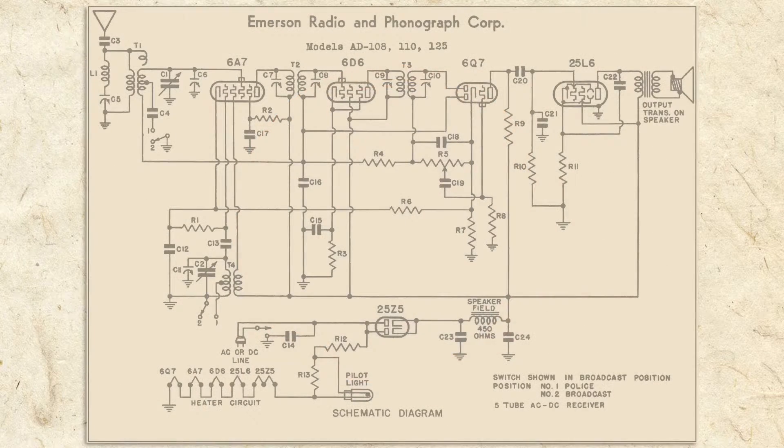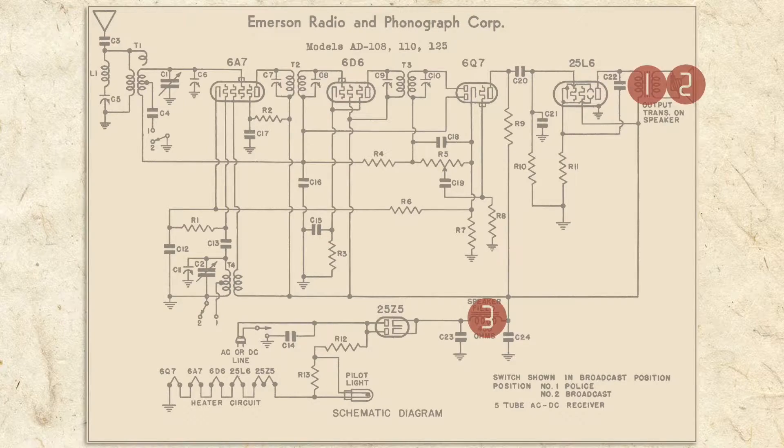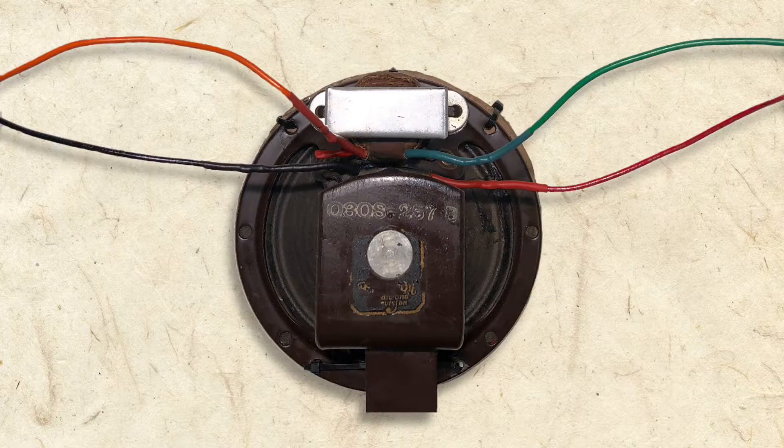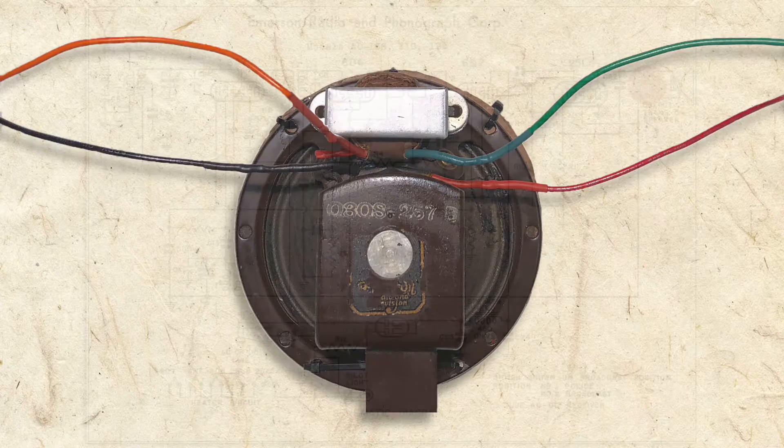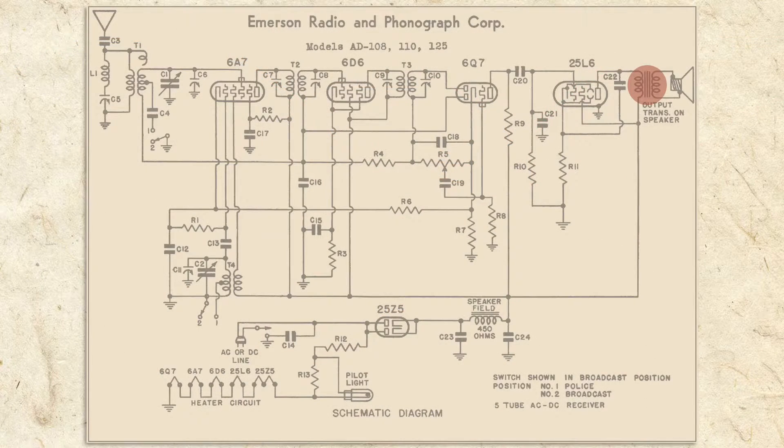On our schematic, the speaker is broken down into three sections, even though they're all physically attached as one unit. This section is called the output transformer. This is the voice coil and cone, and this is the field coil.